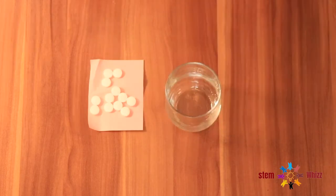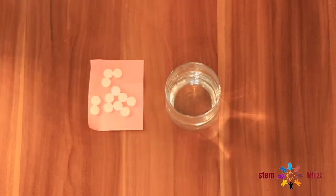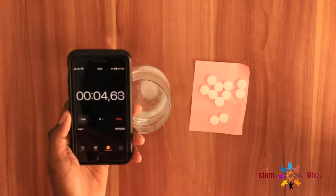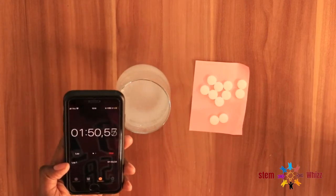First, fill the jar with room temperature water then put one whole antacid tablet and time the reaction until the tablet is entirely dissolved. Repeat this step two more times and record the results you get each time.